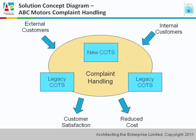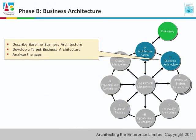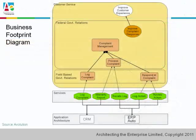In the business architecture, we're going to do an as-is architecture, a to-be architecture, and a gap analysis, and we need artifacts to show our stakeholders for those. Here is one of the most interesting artifacts in TOGAF 9, and that's a business footprint diagram.